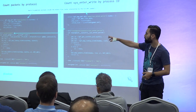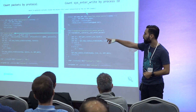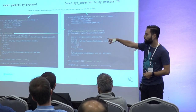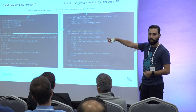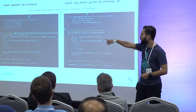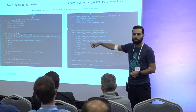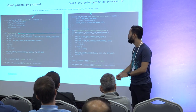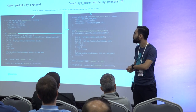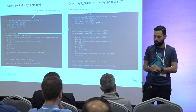We have the packet, we extract the protocol, we look up the protocol in the keys of the HashMap, and then we count the number of packets by protocol.